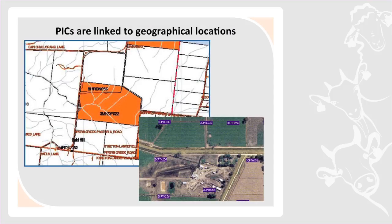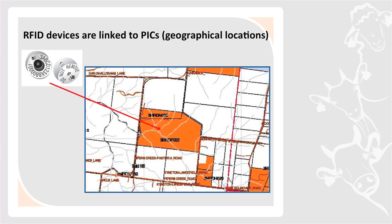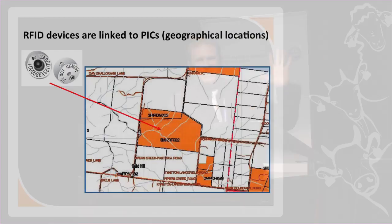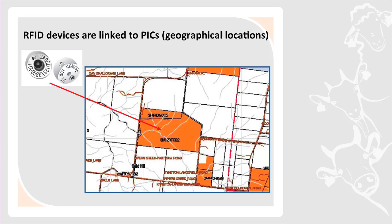PICs — property identification codes — are linked to geographical location. As you can see here, this is a property identification code, and you can see the satellite image of that same parcel of land. When tags are issued, they're sent to a property identification code, so from the very moment the tag is purchased we know it is at this location.